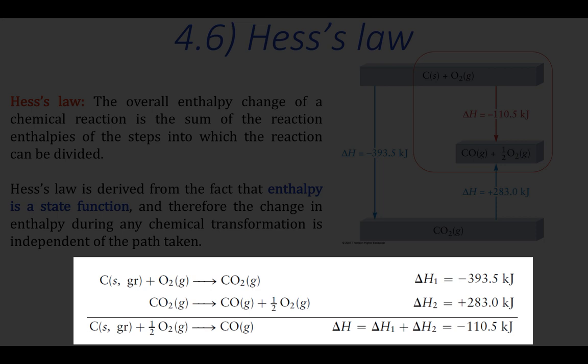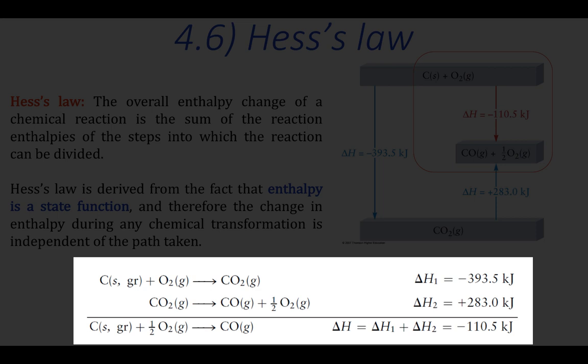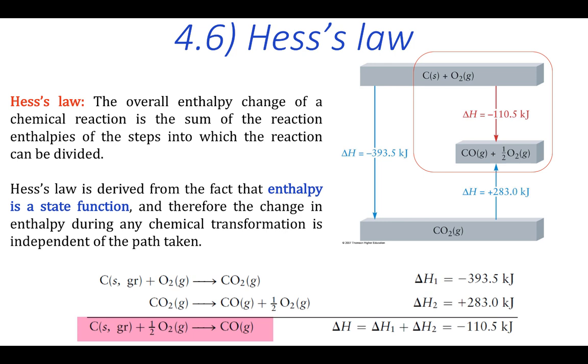Here we see how this law can be used to determine the enthalpy change of a chemical reaction that would be difficult to determine experimentally. One such reaction is the oxidation of carbon in the form of graphite to form carbon monoxide. If you take graphite and ignite it in air where there is plenty of oxygen, you're going to produce carbon dioxide and not carbon monoxide.